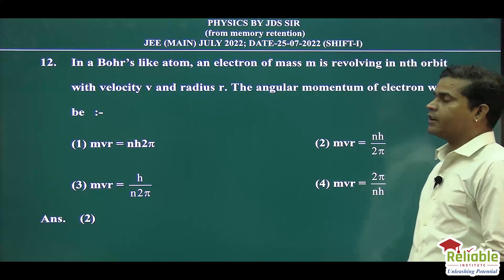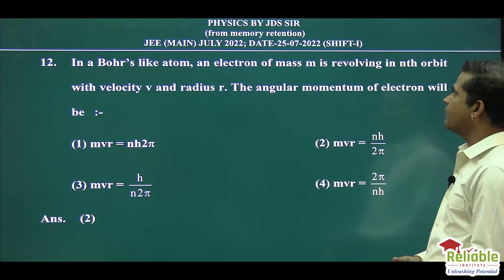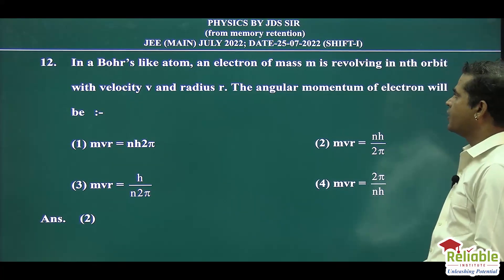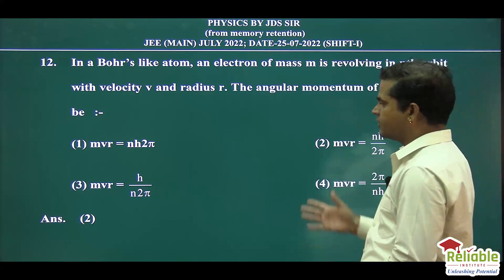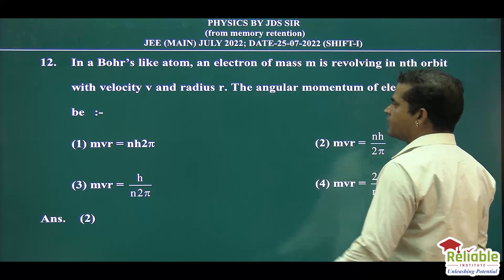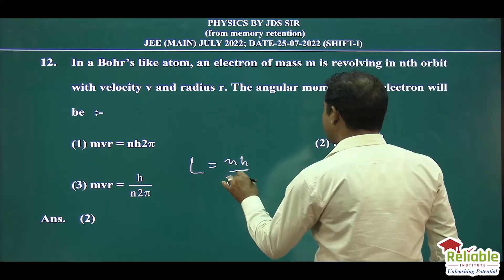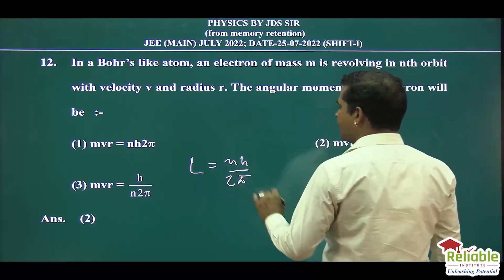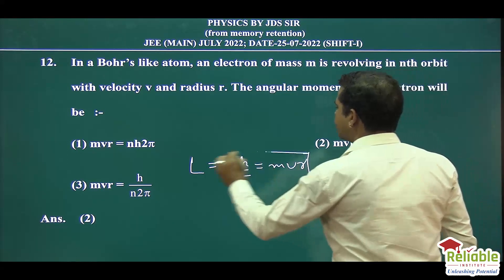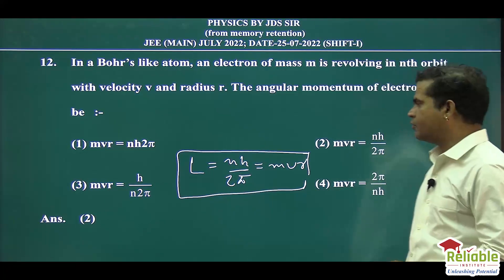Question number 12 is also modern physics, very related to atomic models. It is asked that given the mass of an electron, the velocity, and the radius of the nth orbit, what is the angular momentum? We know that if any electron moves in any orbit, the angular momentum is nh upon 2π, and we can write the angular momentum as mvr. So, mvr equals nh upon 2π — this is option number 2.